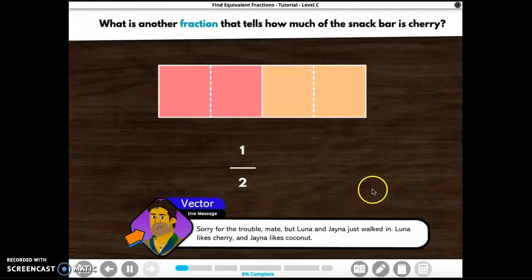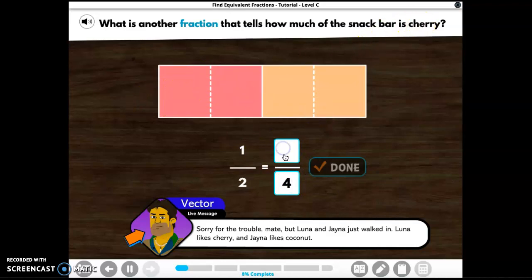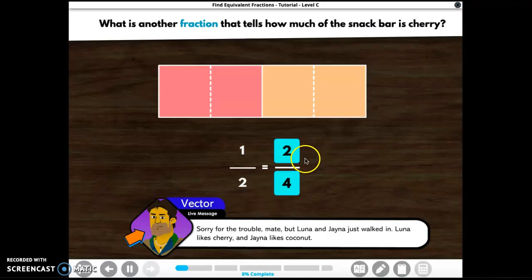There we go. What is another fraction that tells how much of the snack bar is cherry? Well, now that they've folded it in different parts, how many equal parts do we have? We have two cherry and two coconut. Two plus two is four. So there's four total pieces, but how many are cherry? I only see two here, so two. Exactly. One half and two fourths name the same amount. They are equivalent fractions. We can say that one half equals two fourths.